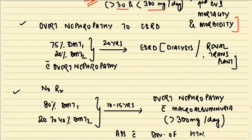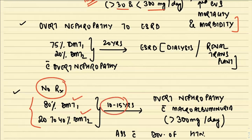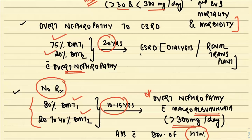Without treatment, 80% of type 1 and 20 to 40% of type 2 diabetes patients will develop overt nephropathy with macroalbuminuria — more than 300 mg/day of protein — within 10 to 15 years, associated with hypertension. Once overt nephropathy develops, 75% of type 1 and 20% of type 2 diabetics with overt nephropathy will progress to end-stage renal disease over 20 years, requiring dialysis and renal transplant.